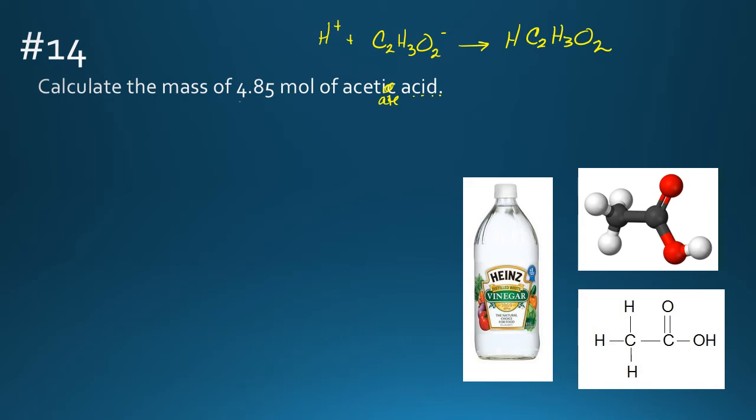We have moles and we're trying to get to mass. So your plan is, how are you going to get from moles to mass? That's right, you need the molar mass. So pause the video and come up with the molar mass for acetic acid, a.k.a. vinegar. And if you came up with 60.05, yay, that is correct.